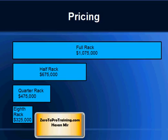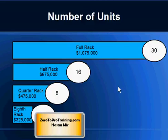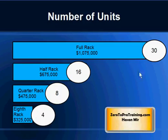Regarding pricing, you can buy Oracle ExoLogic in four different sizes: full rack, half rack, quarter rack, or eighth rack. You get the same physical box size, but the number of servers differs. The prices are approximately: full rack — a little over one million dollars, half rack — $675,000, quarter rack — $475,000, and eighth rack — $325,000. In a full rack you have 30 servers, half rack has 16, quarter rack has 8, and eighth rack has 4.